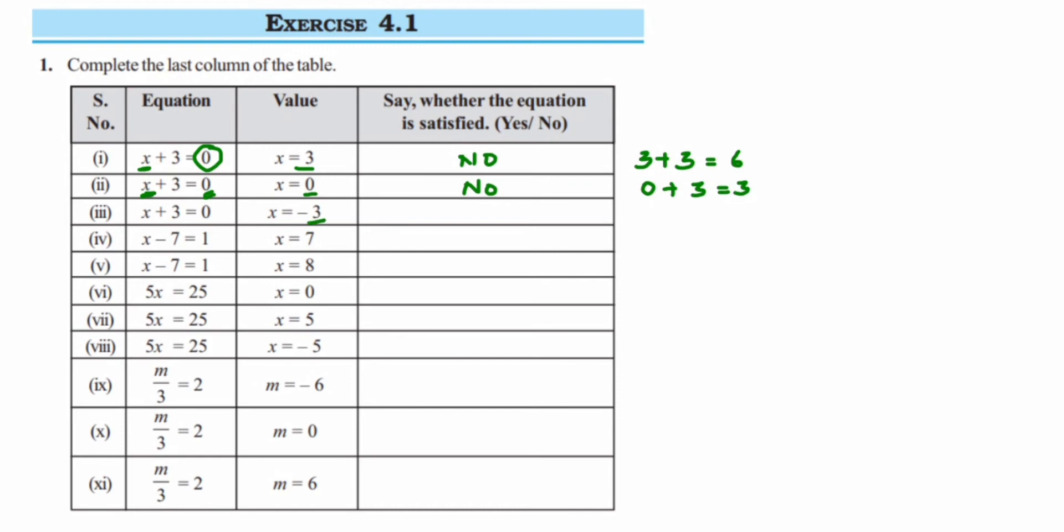The next we have x is equal to minus 3. When you substitute here, it becomes minus 3 plus 3, which is equal to 0, because minus 3 plus 3 when you add up, it sums up to 0. And here on the RHS also they have given us 0, so we can say yes.